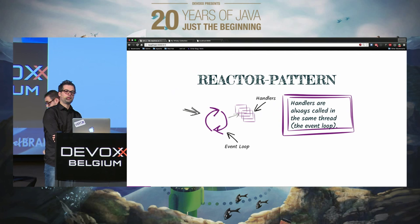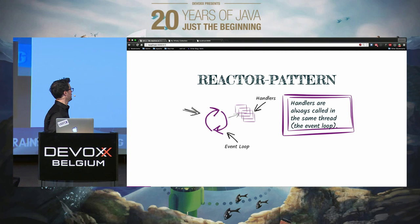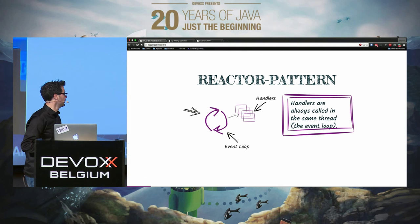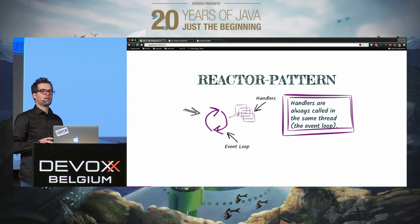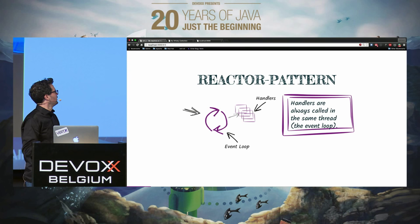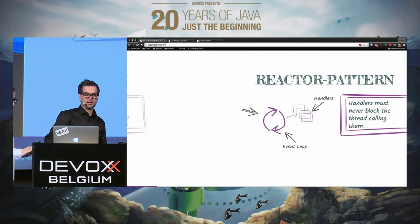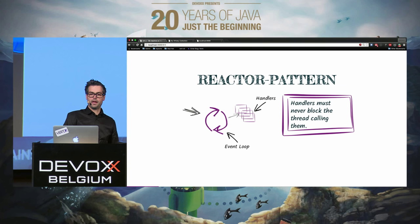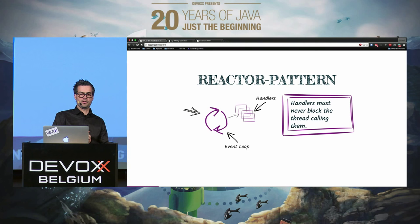The whole concept of Vert.x is that we live on the Reactor pattern. We have one single event loop — a single thread. Because we have a single thread, it means we can never be blocked. If we are blocked, the entire application stops. To overcome this, we have handlers — a way to work around the blocking model.